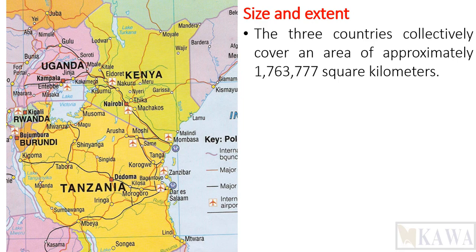This is followed by Kenya, which has a total size of 582,000 square kilometers, with a population of around 53 million. And lastly, Uganda, which has a population of 45.7 million, and is the smallest of the three.